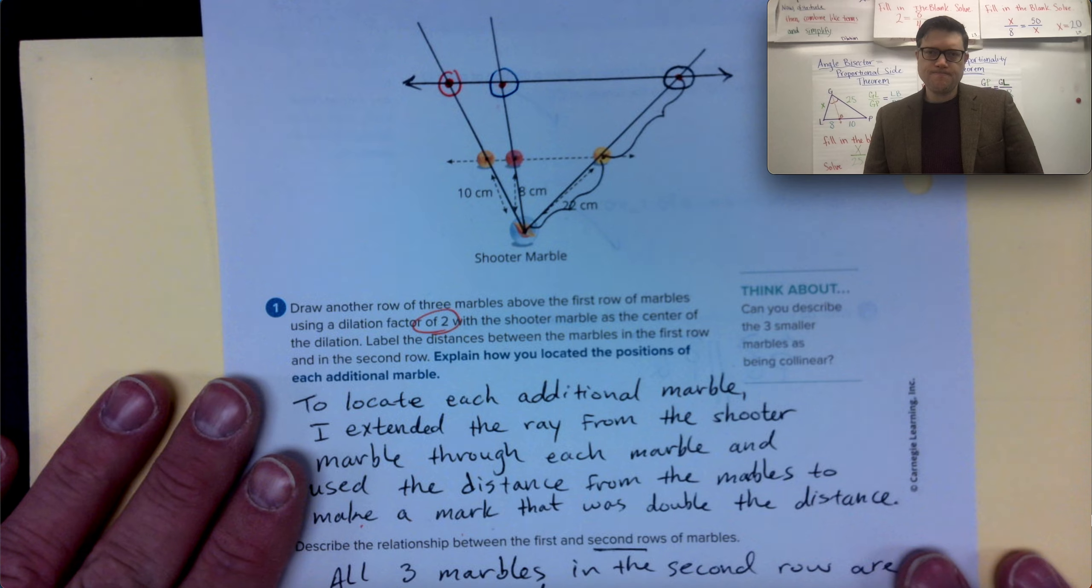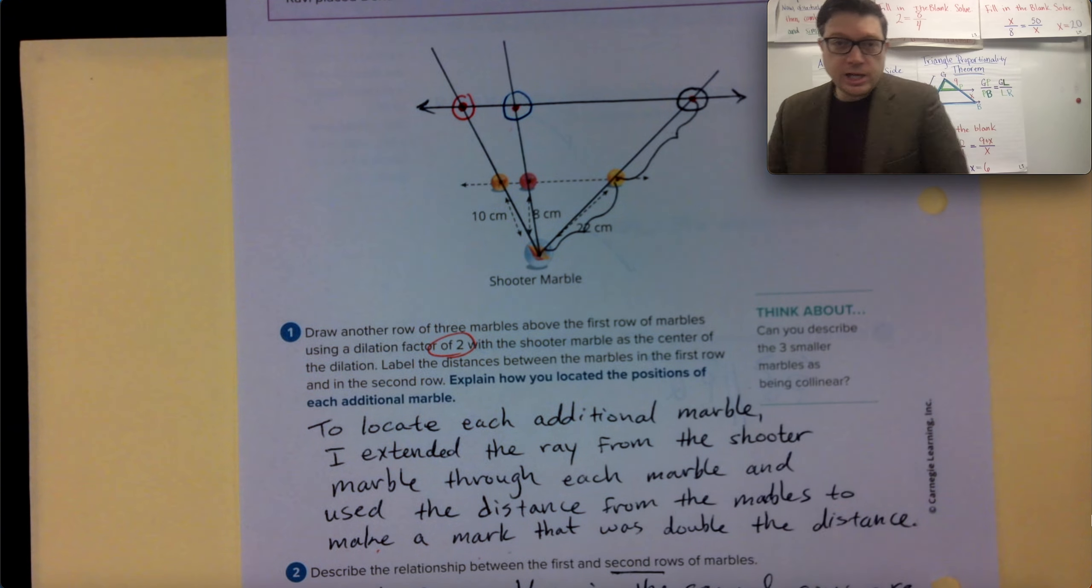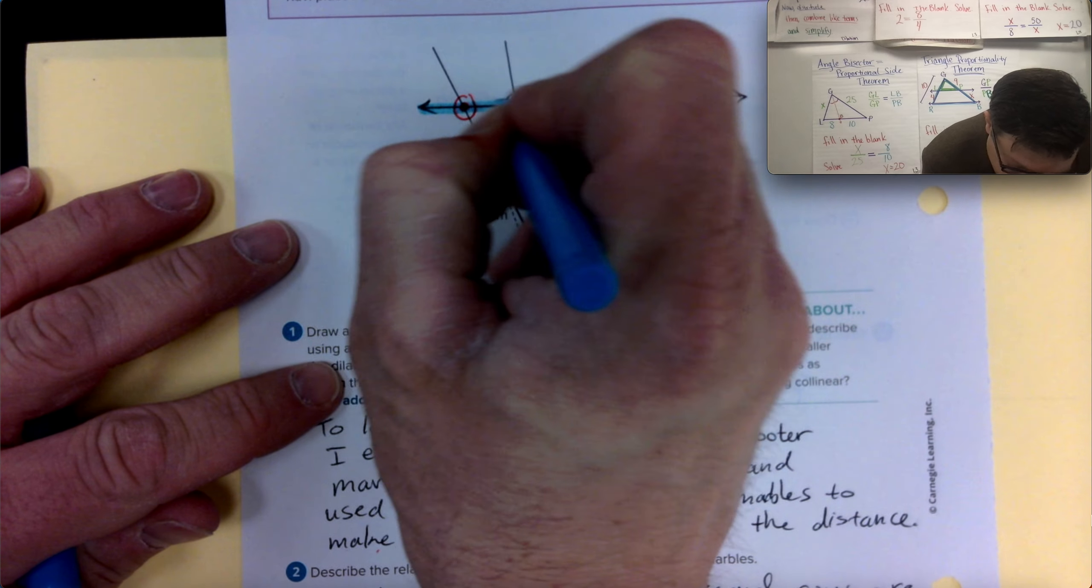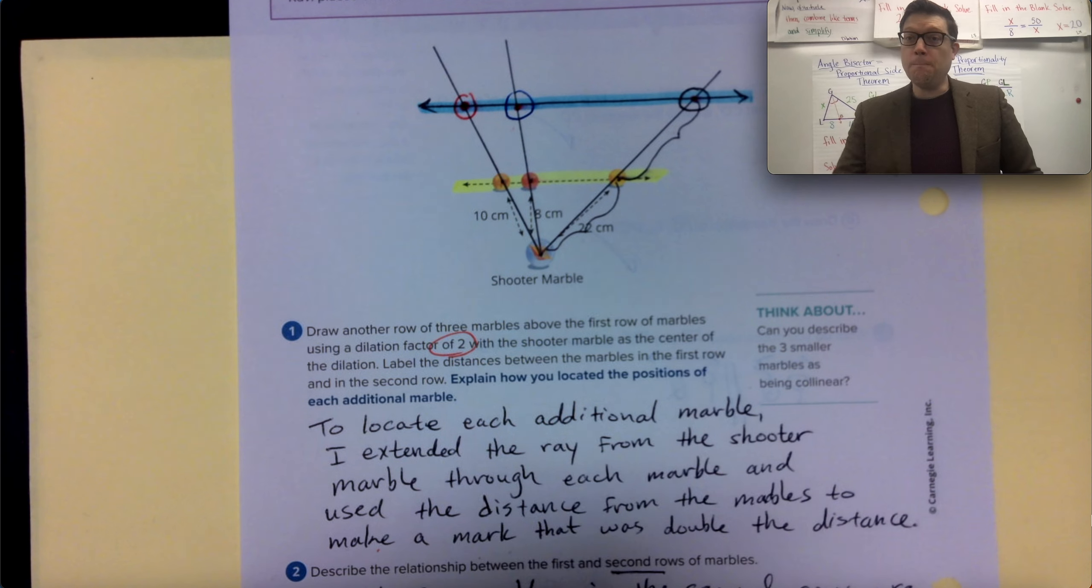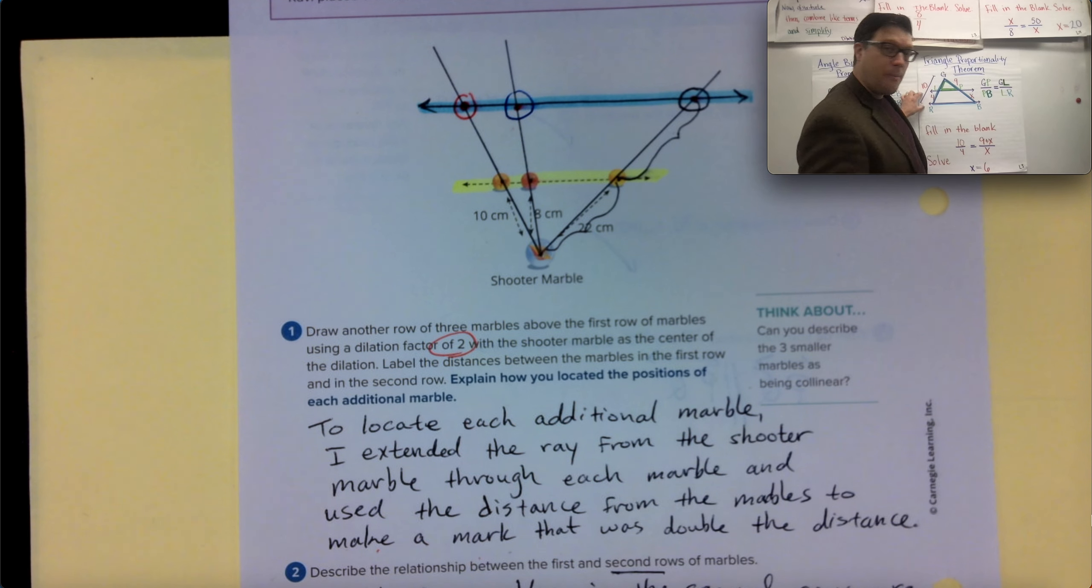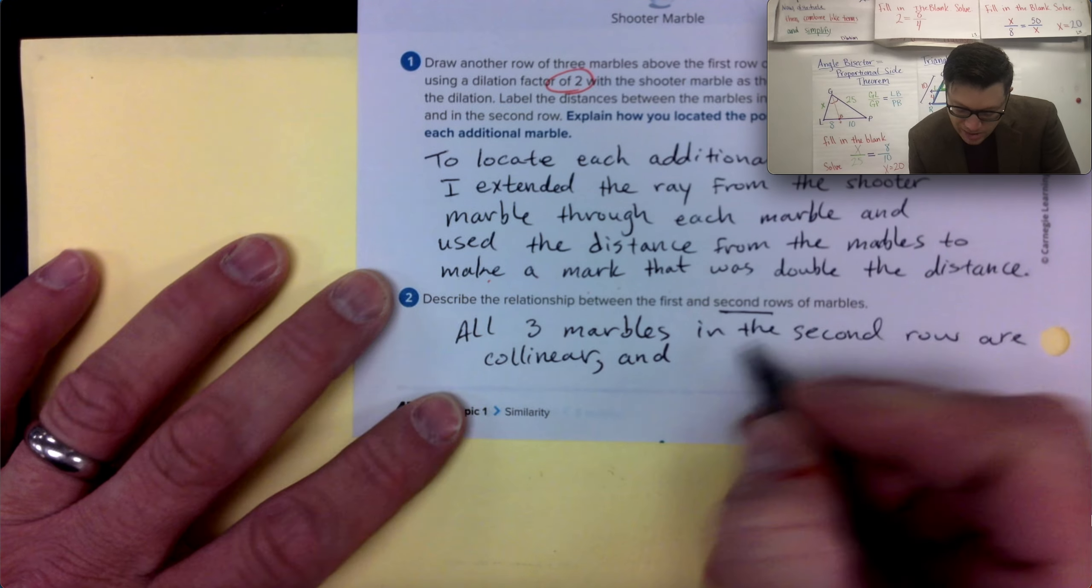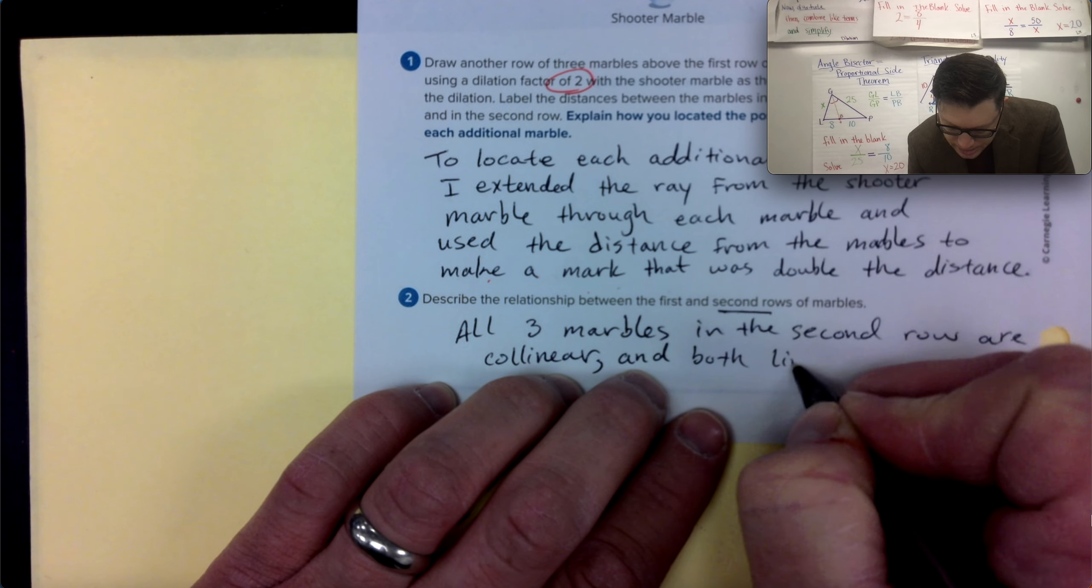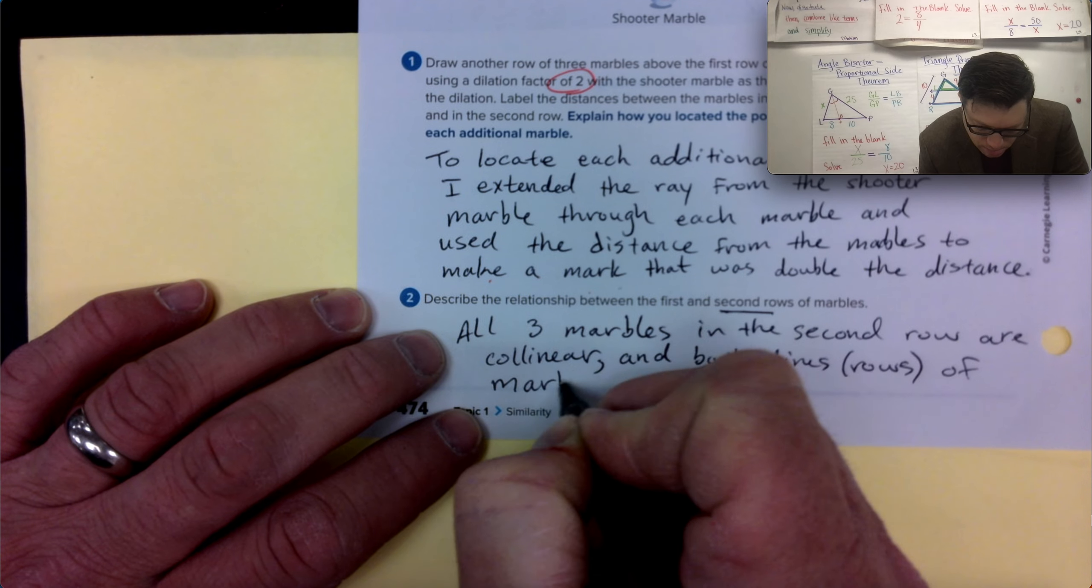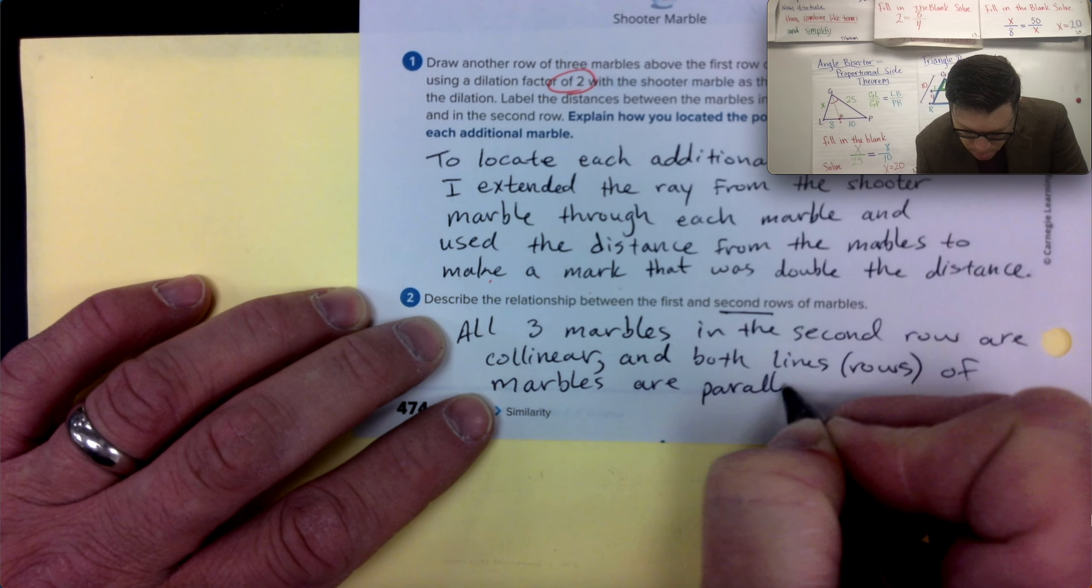Okay. So did you observe that the lines that we created, this row right here and this row out here, they're actually parallel? That's probably going to pop up in something we're going to talk about in our future lessons, the triangle proportionality theorem. It says something to the fact of if you have parallel lines and there are transversals that create a triangle in conjunction with those parallel lines, then we have triangle similarity. So I'm going to make that be visible here. Both lines, meaning rows of marbles, are parallel.